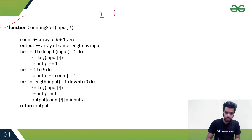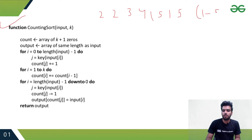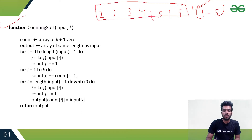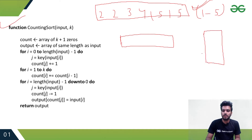Let me show a simple example of how counting sort works. Let's say there is an array containing the elements: 2, 2, 3, 4, 1, 5, 1, 5. We know the range of values in the input array is one to five. For counting sort, we must know the range of the input array, so it creates an external array with indices from one to five.